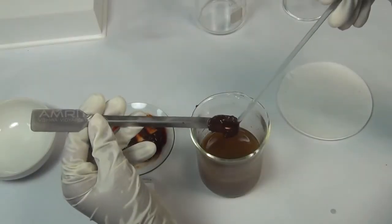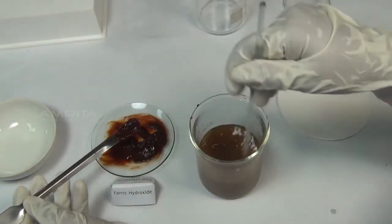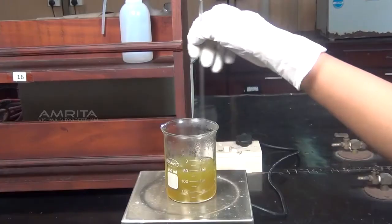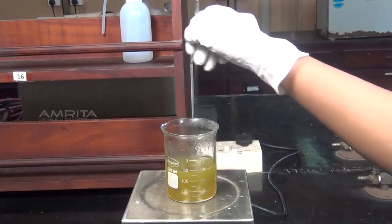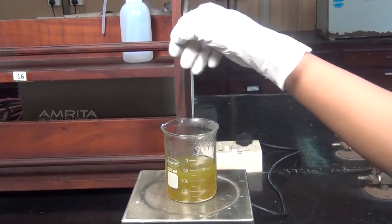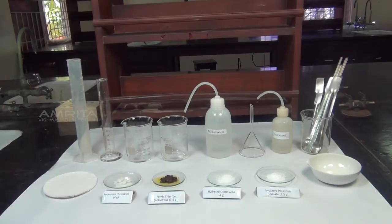This complex can be prepared by dissolving freshly prepared ferric hydroxide in a solution of potassium oxalate and oxalic acid. Our aim here is to prepare a pure sample of potassium trioxalatoferrate-3.